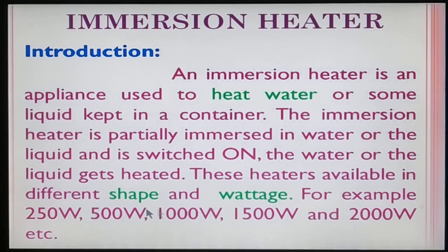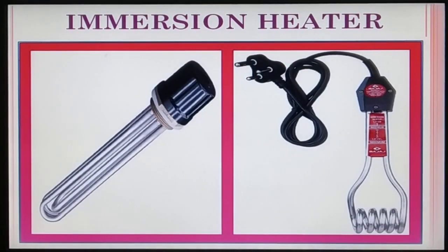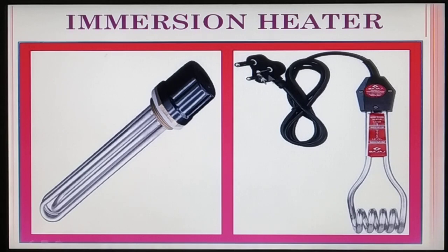There are variable wattages available: 250W, 500W, 1.5KW, and 3KW. There are immersion heaters in container type and direct immersion type. For the direct immersion heater, you can plug it into a bucket, insert it into the water, check the water level, then dip it in and switch it on.